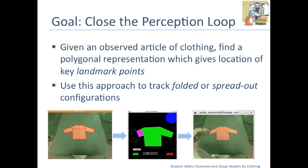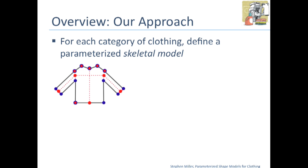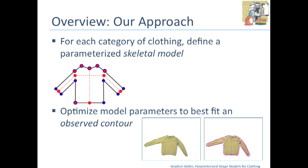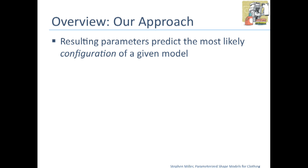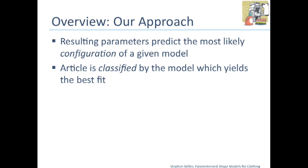We'd like to use this approach to track both folded and spread-out configurations. So a brief overview: for every category of clothing, we're going to define some sort of parametrized skeletal model, and then we're going to optimize over those model parameters to best fit an observed contour. The resulting parameters give us the most likely configuration of a given model class, and then we classify the article by seeing which model yields the best fit.